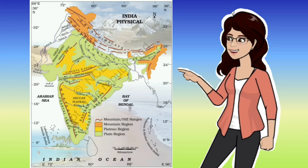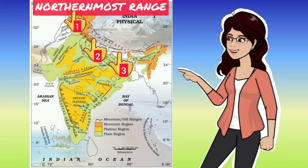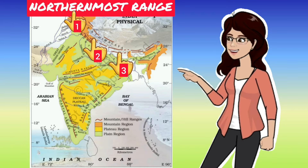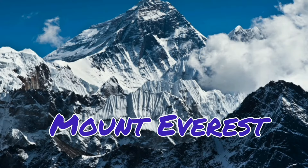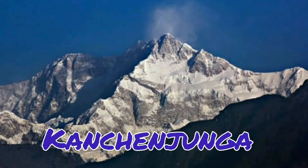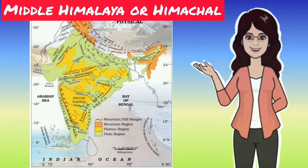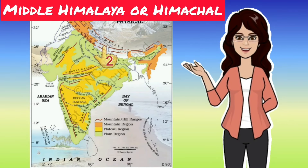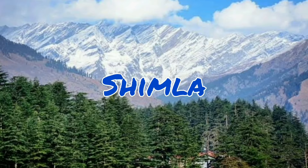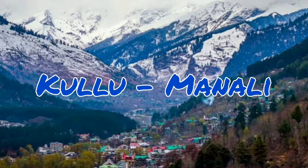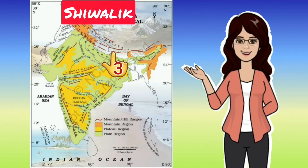The Himalayan mountains are divided into three parallel ranges. The northernmost range is known as the Great Himalaya or Himadri — the world's highest peaks are located here, for example Mount Everest and Kanchenjunga. The middle range is the Middle Himalayas or Himachal, where many popular hill stations are situated, such as Shimla and Kullu-Manali.